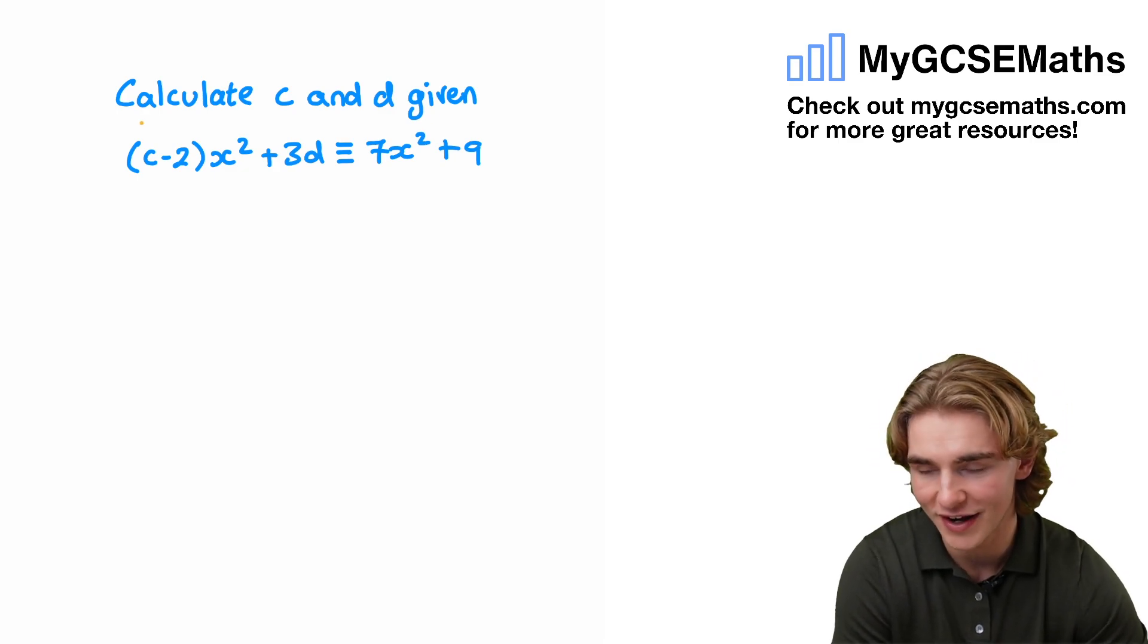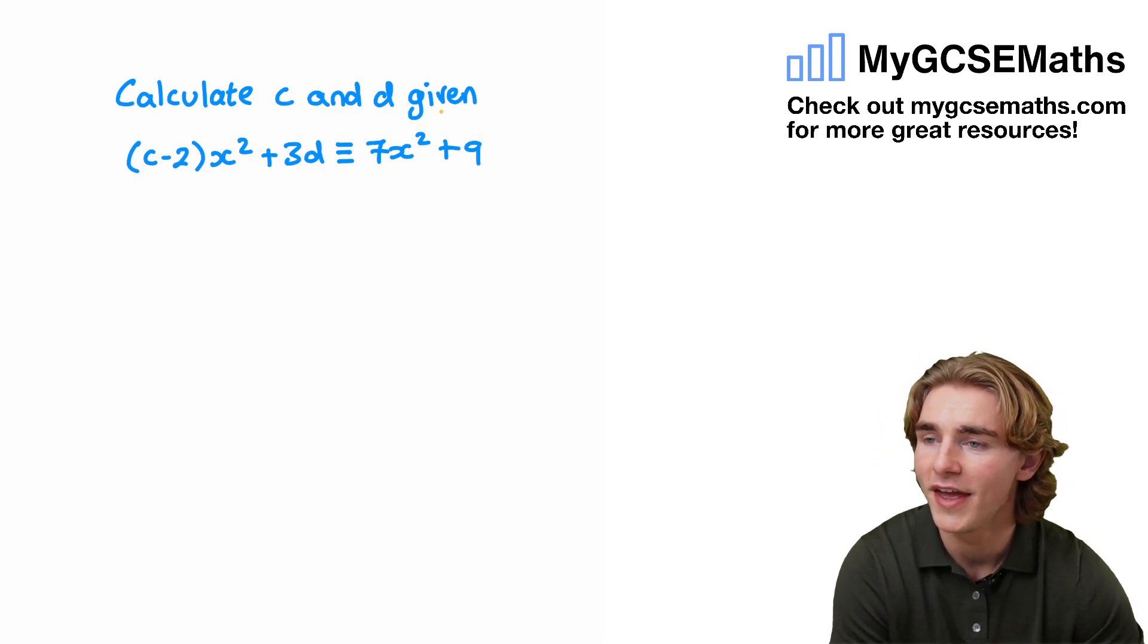The question asks us to calculate the value of c and d given that (c-2)x² + 3d is equivalent to 7x² + 9.